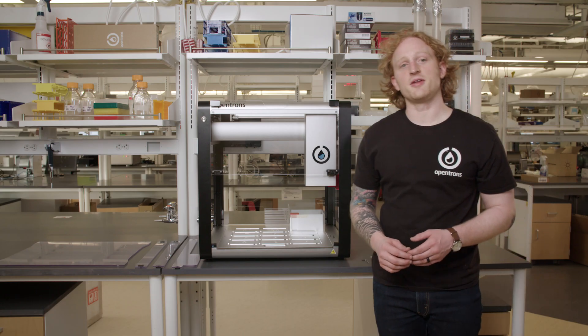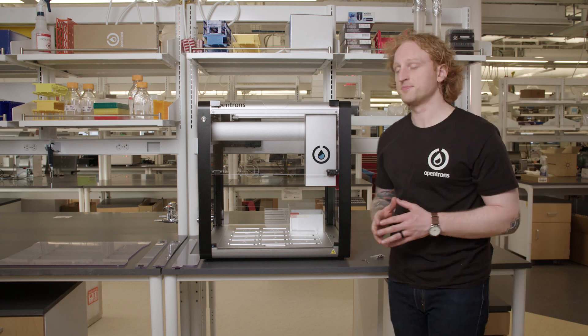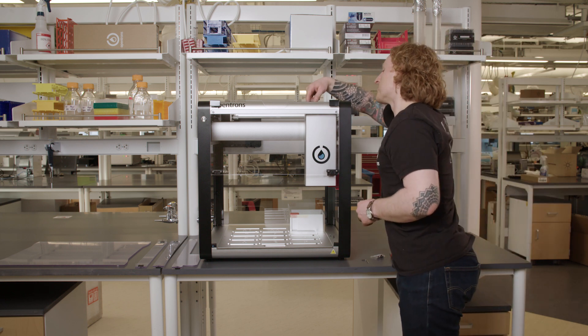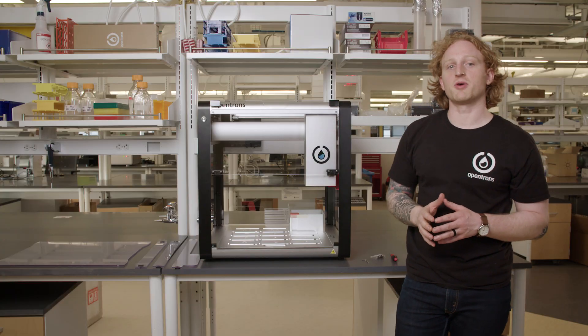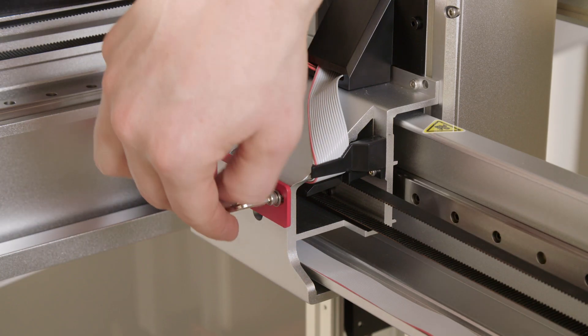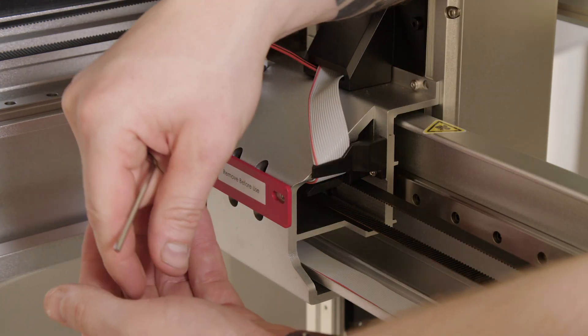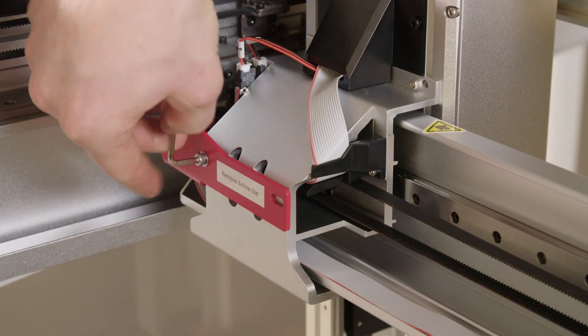The next bracket is held on by three screws located slightly above the pipette carriage. In order to remove this bracket and access the third screw, I will remove the two screws attached to the pipette carriage first.